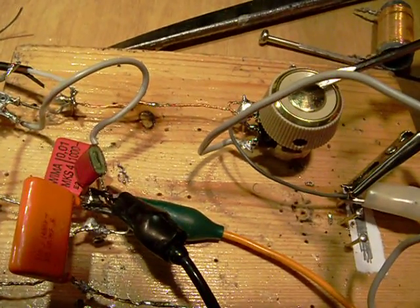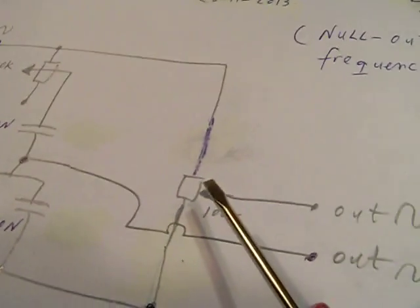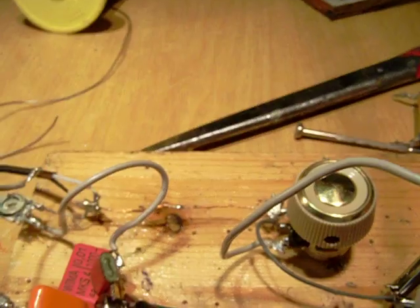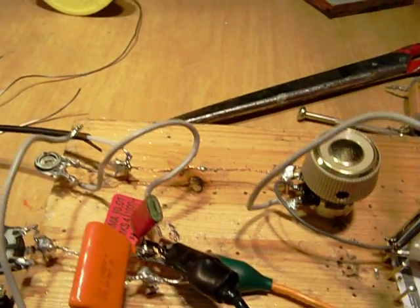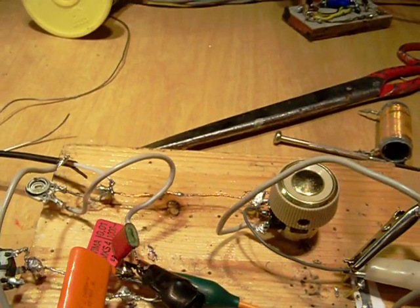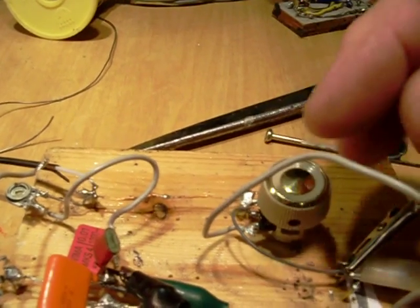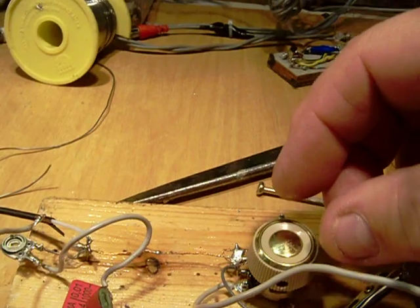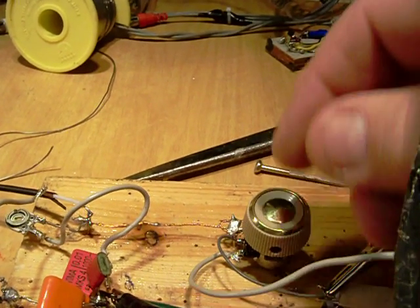This is the 100k potentiometer. It's here in the circuit. And put on the audio now. And when I change the value from this resistance, so I turn the knob from the potentiometer,